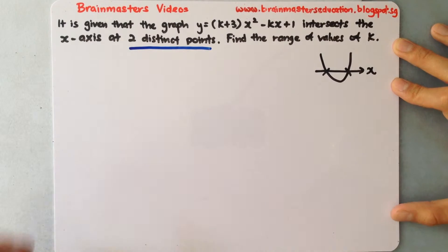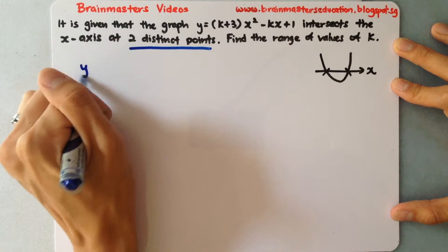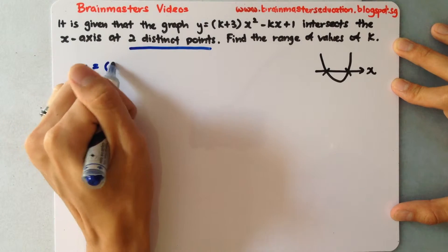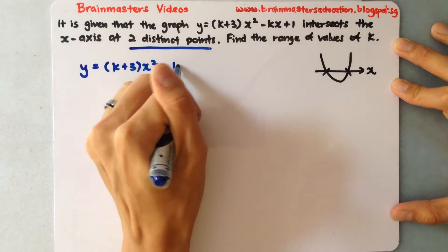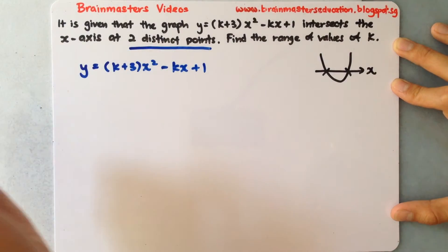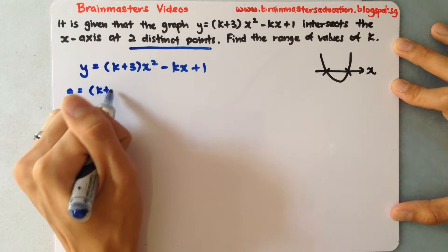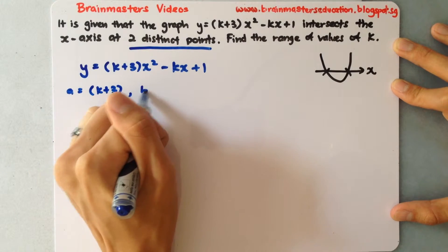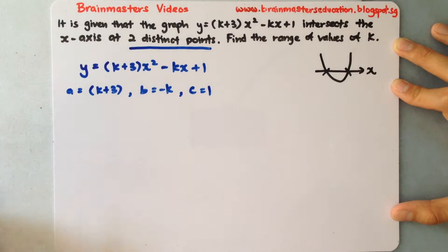Let us first write down the question and identify our a, b and c. y equals k plus 3 x square minus kx plus 1. So from here I know that my a is k plus 3, b is negative k, c is 1.